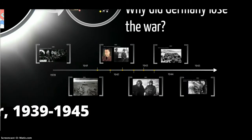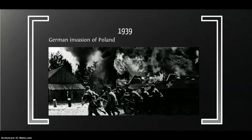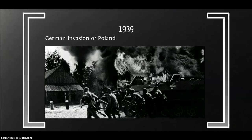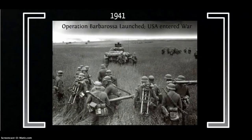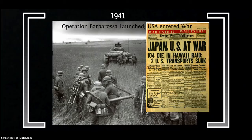Let's begin with some chronology. You need to know some basic chronology in order to structure your understanding of the sequence of events. In 1939, the German invasion of Poland precipitated the war as Britain and France declared war on Germany. In 1941, the launch of Operation Barbarossa — the invasion of the Soviet Union — and the United States also entered the war after the Japanese bombing of Pearl Harbor and Hitler's declaration of war on the United States.